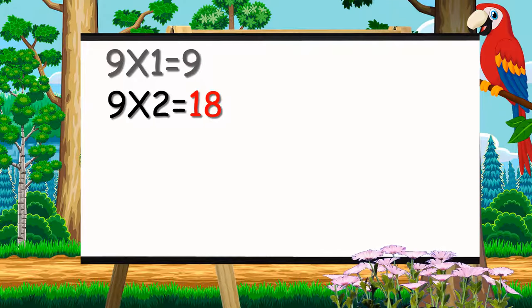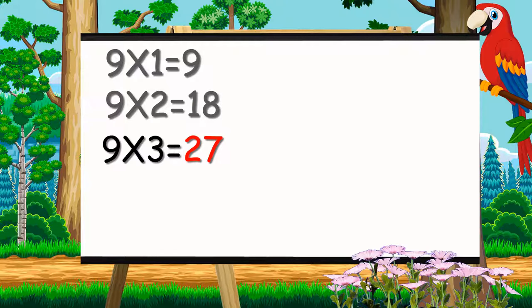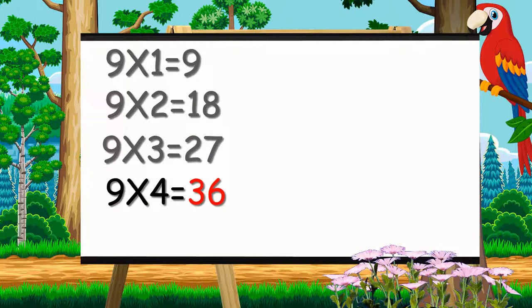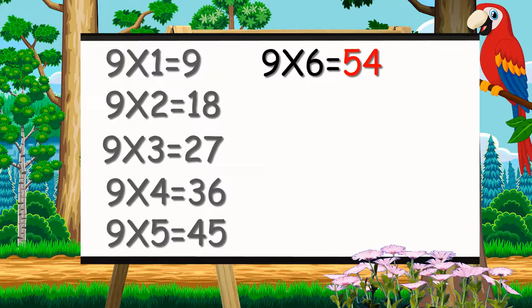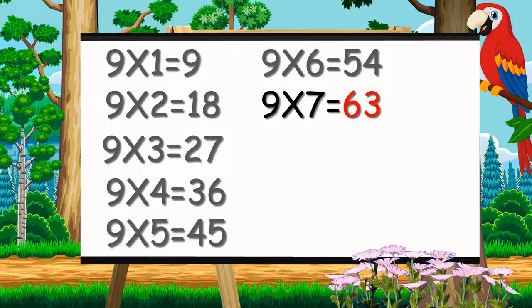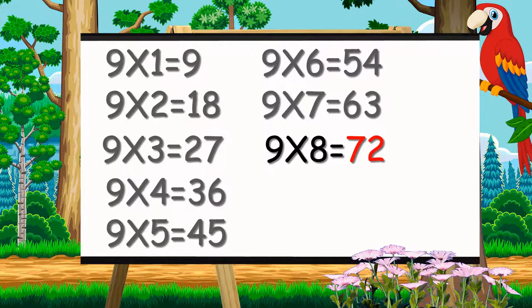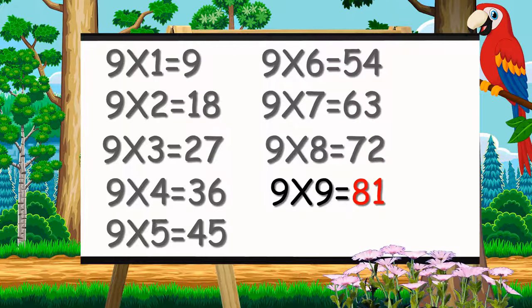Nine twos are eighteen. Nine threes are twenty-seven. Nine fours are thirty-six. Nine fives are forty-five. Nine sixes are fifty-four. Nine sevens are sixty-three. Nine eights are seventy-two. Nine nines are eighty-one.